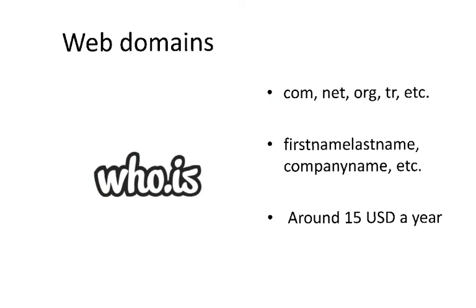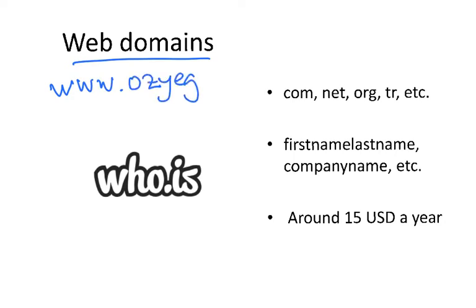Each site online, on the web, has a web domain. For instance, a university's web domain might be something like www.university.edu.tr — that is what we call a web domain.